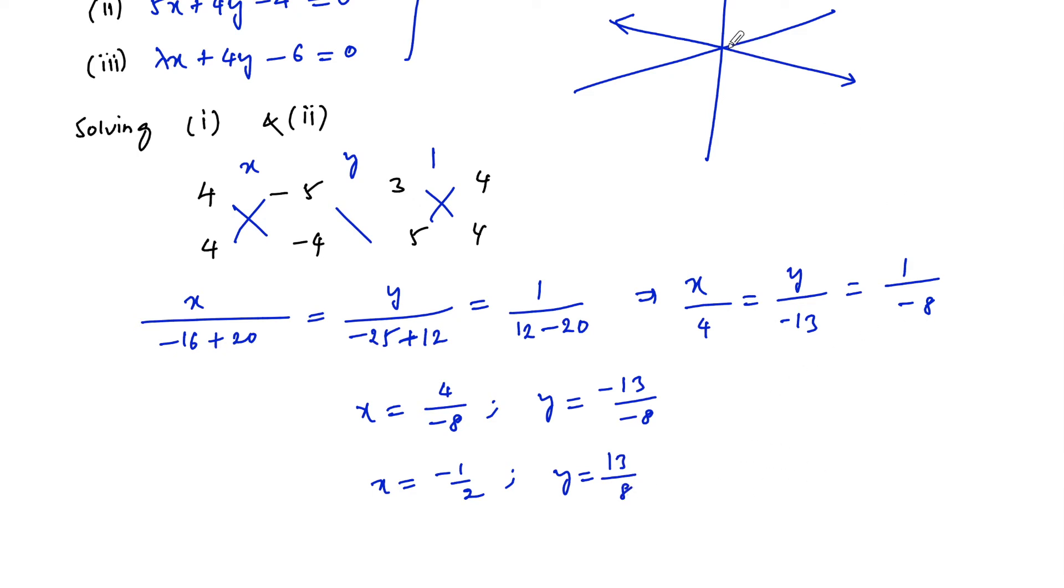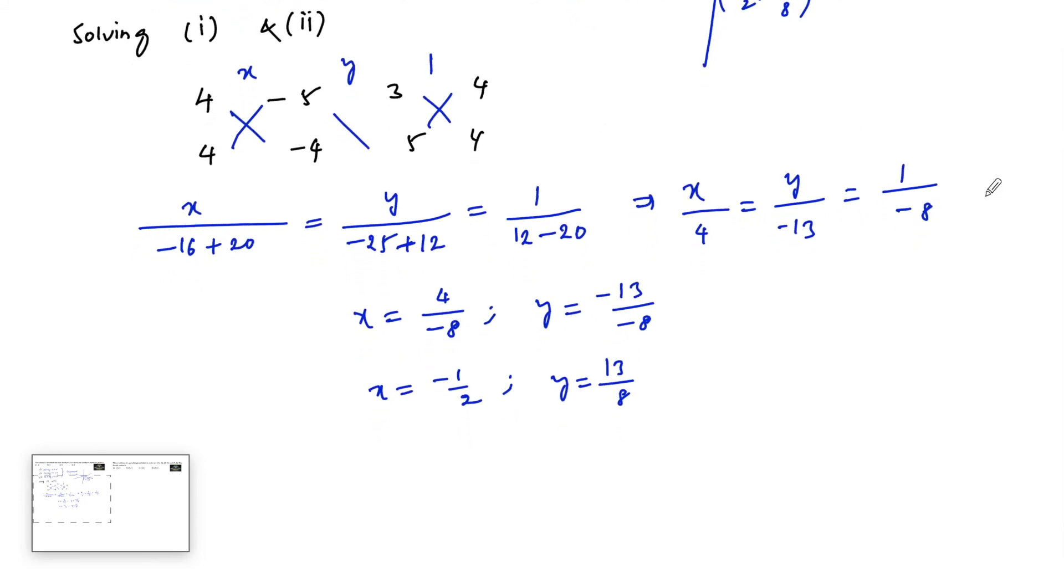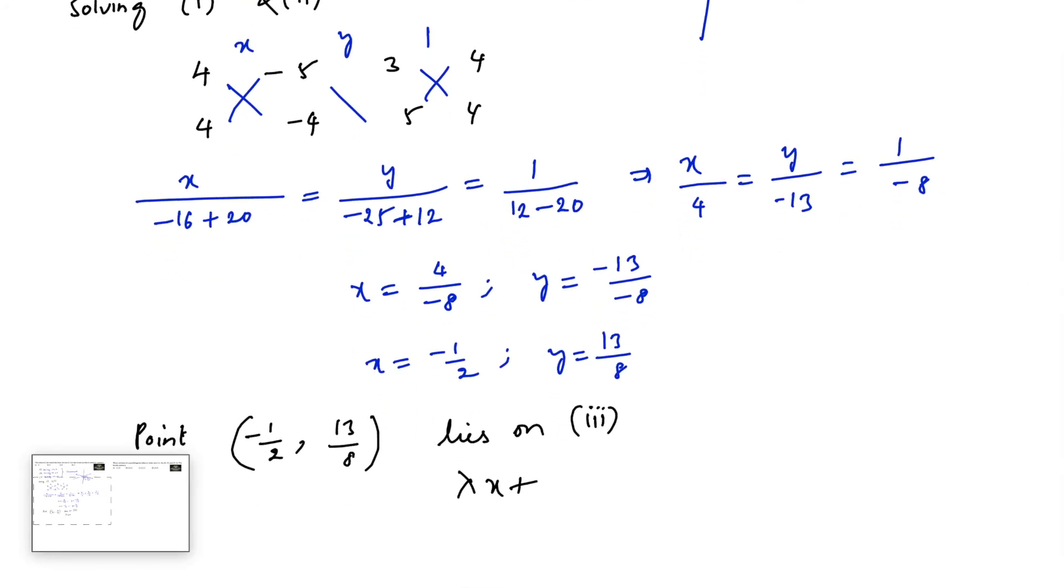This point also lies on the third line because they are concurrent. So point minus 1 by 2 comma 13 upon 8 lies on the third line, that is lambda x plus 4y minus 6 equals 0.